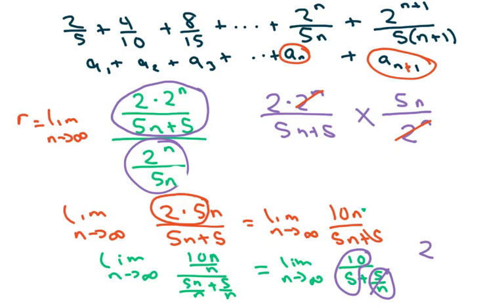And so this right here equals 2. Now, so we have r equals 2. And the absolute value of 2 is not less than 1. Therefore, this series is divergent.